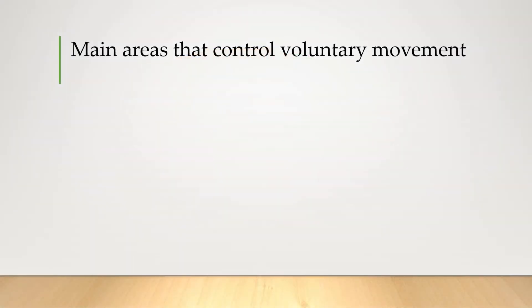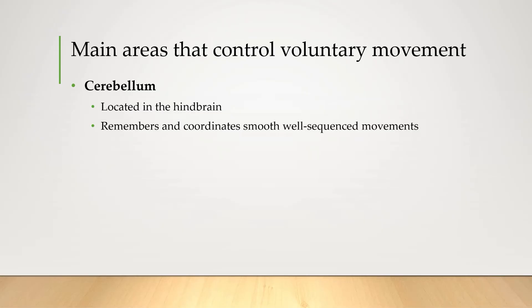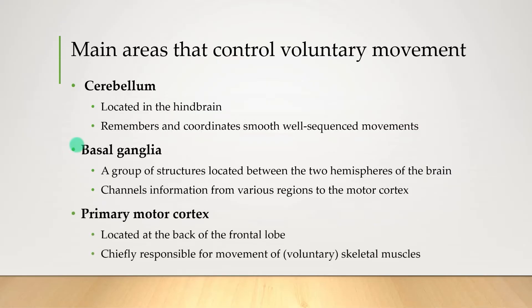Broadly speaking, this is what these parts do. The cerebellum remembers and coordinates smooth, well-sequenced movements. The basal ganglia, located between the two halves of the brain, channels information from all sorts of regions to the motor cortex. And then finally, the primary motor cortex itself is mostly responsible for movement of voluntary skeletal muscles.